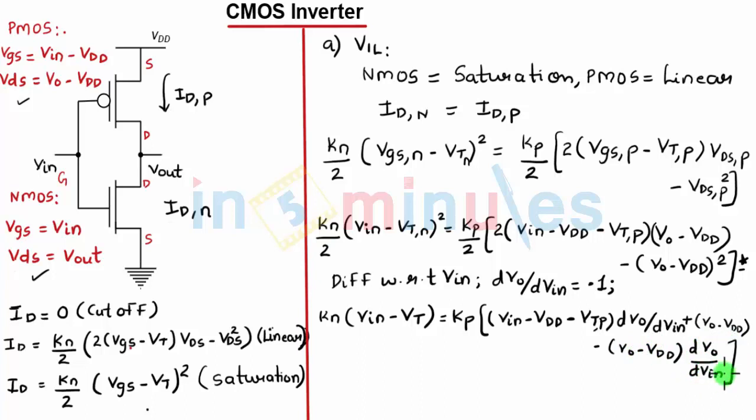Let's substitute DVout by DVIN equal to minus 1 and VIN equal to VIL. That leaves our equation as KN, VIL minus VT is for NMOS, equal to KP, twice Vout minus VIL plus VTP minus VDD.